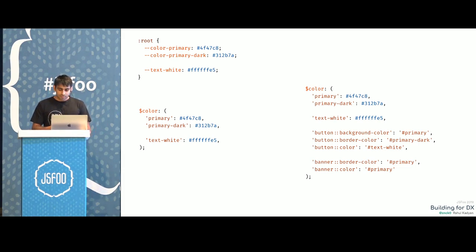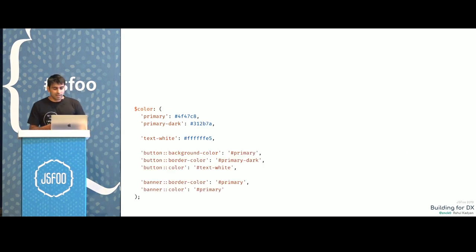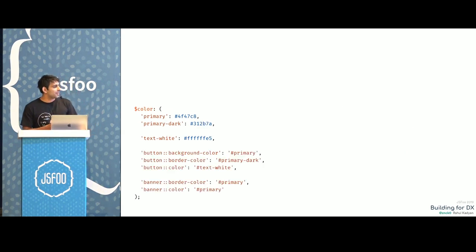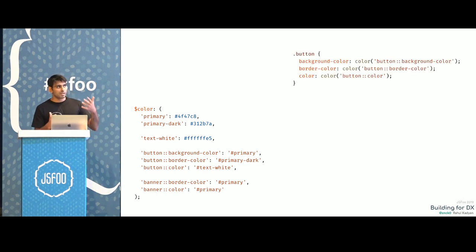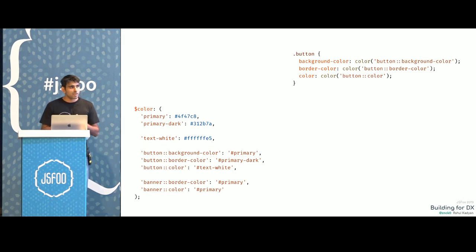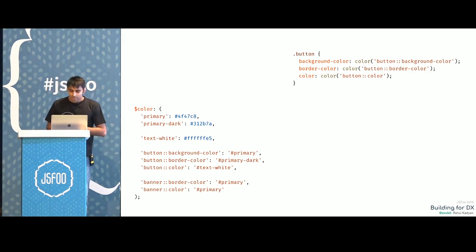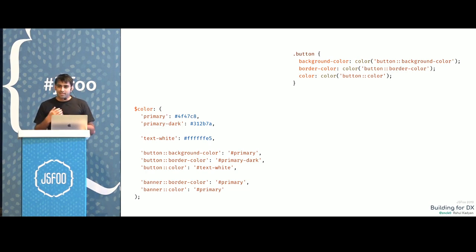We picked Sass and started implementing all the tokens. Using tokens in CSS — a tiny helper called `color` allows us to access tokens from the color map. We started building everything that way: all the padding, sizes, margins, typography — using this system.